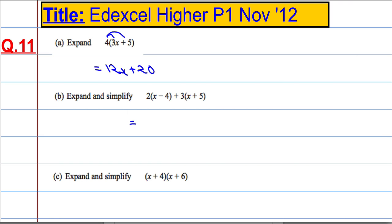Second part - expand and simplify. So you're going to do 2 times x is 2x, 2 times minus 4 is minus 8, 3 times x is 3x, and then 3 times 5 is 15.